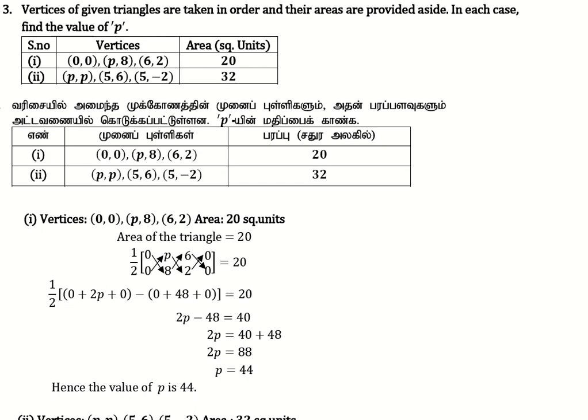This is 5.1, question 3. Vertices of a given triangle are taken in order and their areas are provided. In each case, find the value of p.